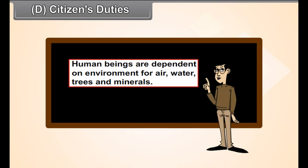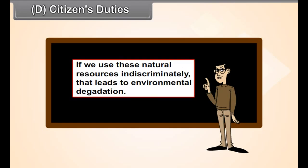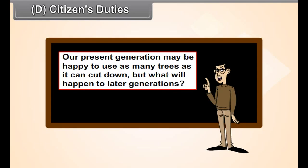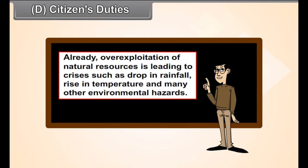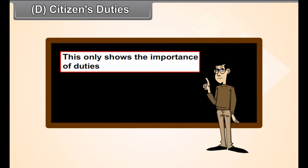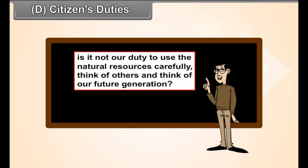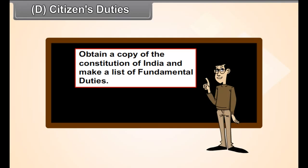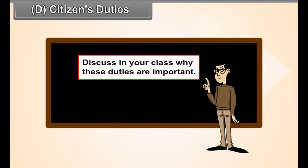Human beings are dependent on the environment for air, water, trees and minerals. If we use these natural resources indiscriminately, that leads to environmental degradation. Our present generation may be happy to use as many trees as it can cut down, but what will happen to later generations? Already, over-exploitation of natural resources is leading to crises such as drop in rainfall, rise in temperature, and many other environmental hazards. This only shows the importance of duties. It is our duty to use natural resources carefully. Think of others and think of our future generations. Activity: Obtain a copy of the Constitution of India and make a list of fundamental duties. Discuss in your class why these duties are important.